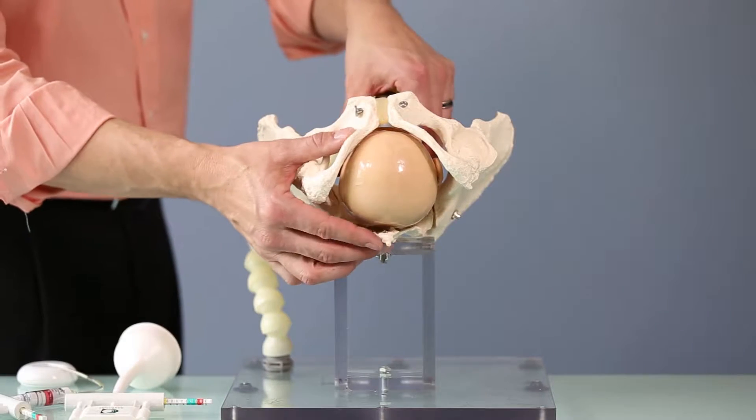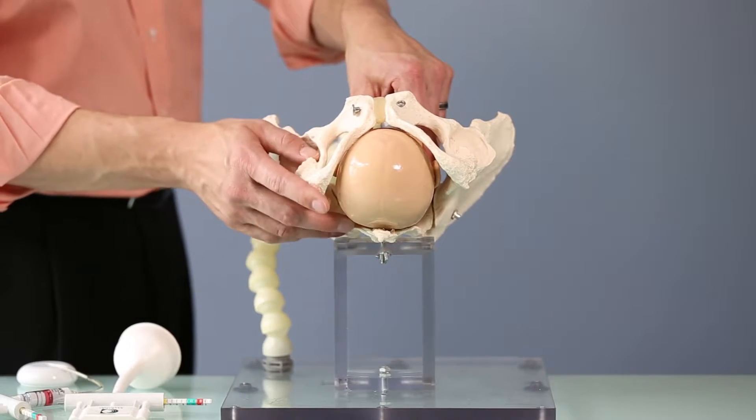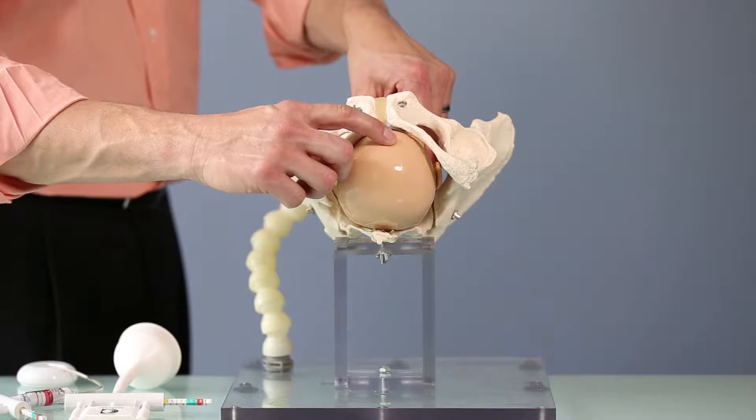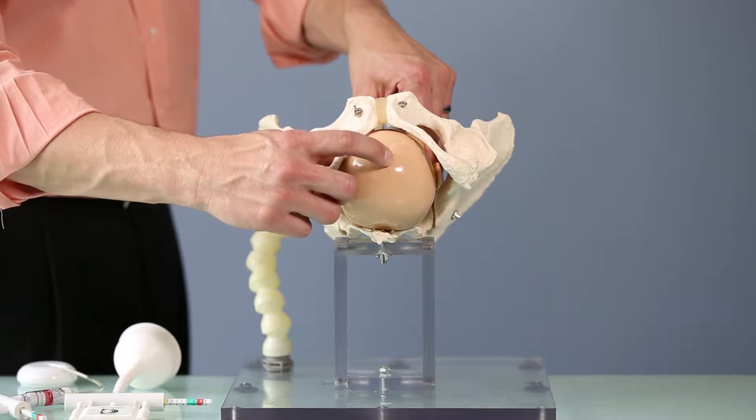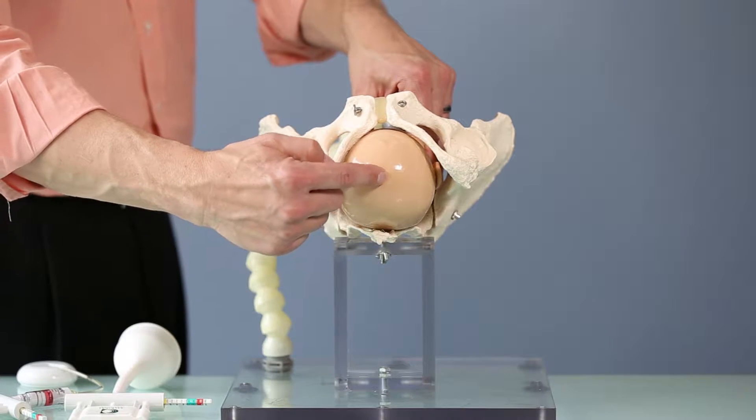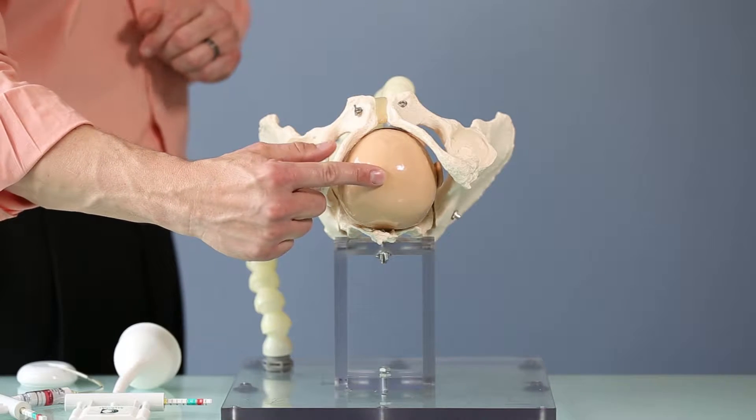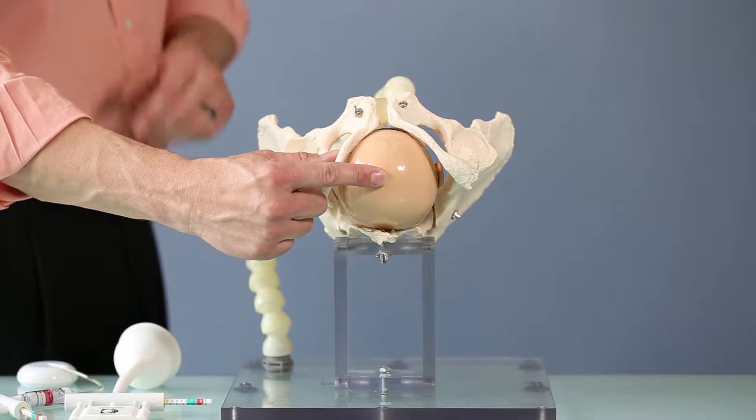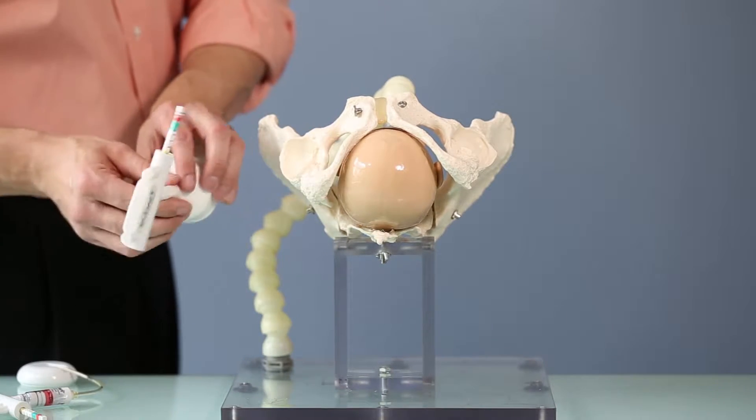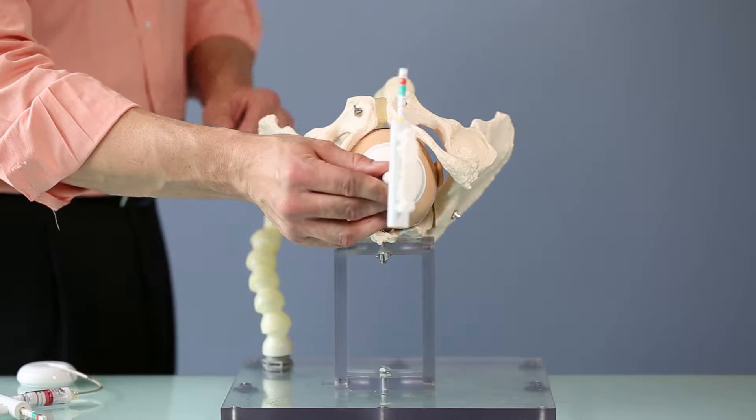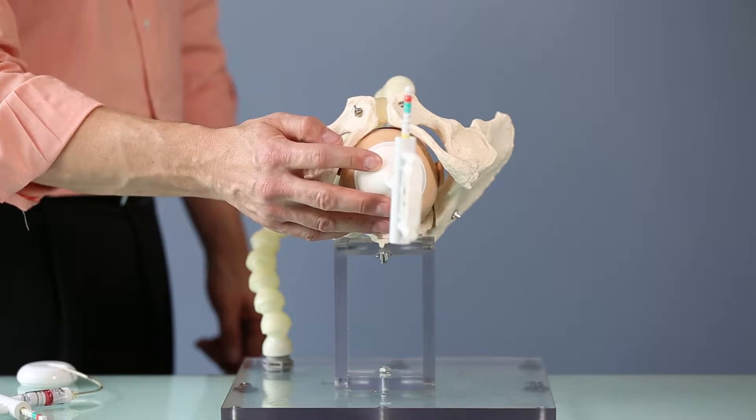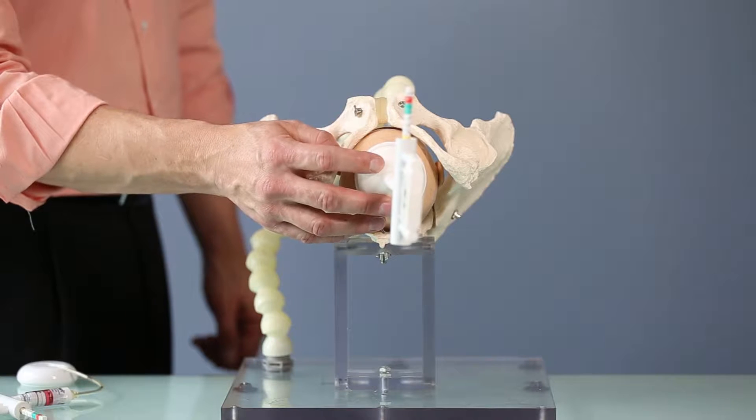If we place this baby straight occiput anterior at the outlet, you'll see that the flexion point three centimeters forward of the posterior fontanelle, a long sagittal suture essentially is my presenting part. So I could take any cup on the table, rigid stemmed or not, and place it on that spot and essentially get that baby delivered with little effort.